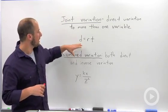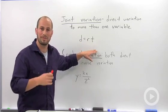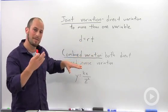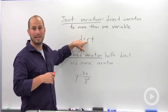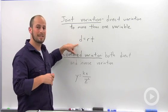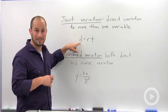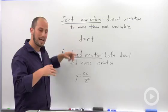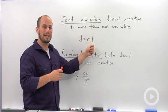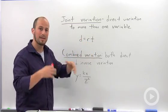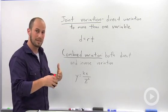The example we have here is distance is equal to rate times time — a pretty straightforward formula. If your rate increases, your distance would increase. Or if your time increases, your distance increases. So distance is dependent on both rate and time, and there's a direct correlation between all three of those.